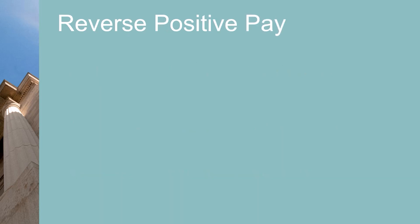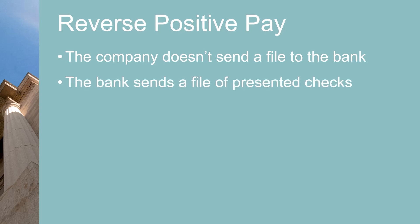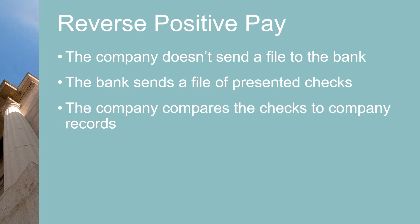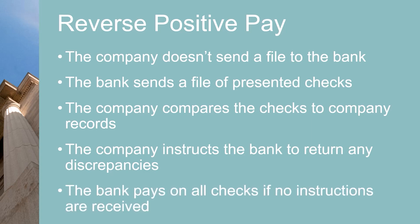Positive Pay is a stronger control than Reverse Positive Pay. In Reverse Positive Pay, the company doesn't submit a file of checks to the bank when the checks are written. Instead, the bank sends a file to the company of all the checks presented for payment each day. The company compares their file to their records and then instructs the bank to return any checks that don't match. If the company does not respond to the bank within a certain amount of time, the bank pays all the checks.